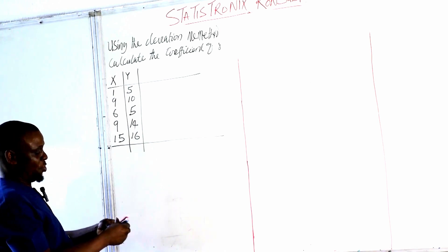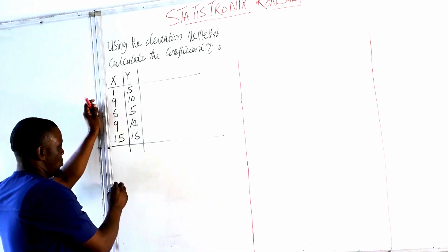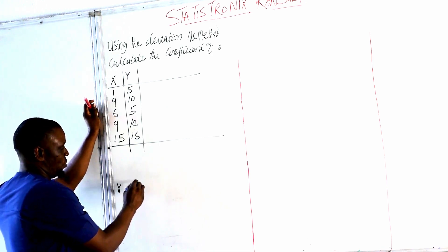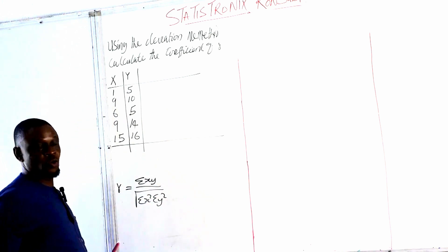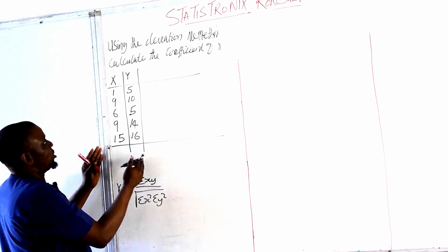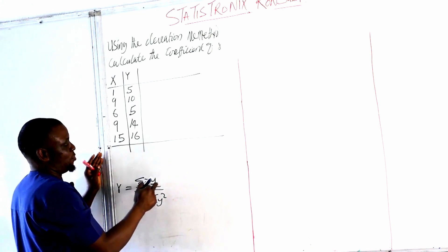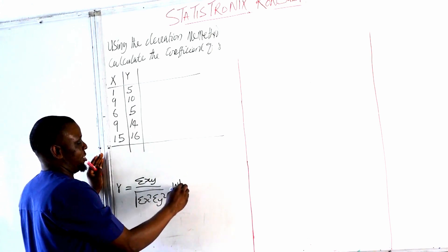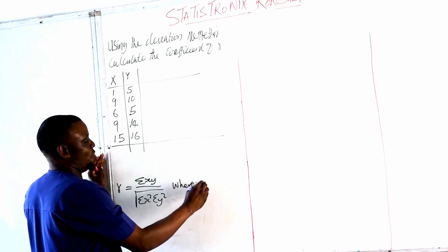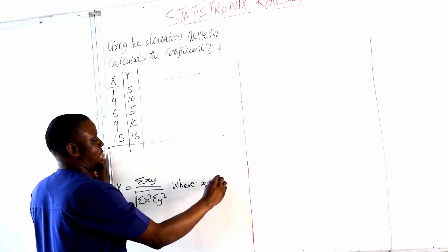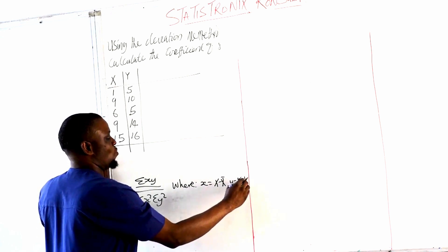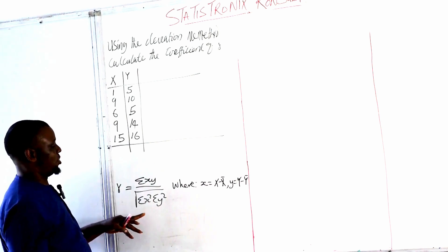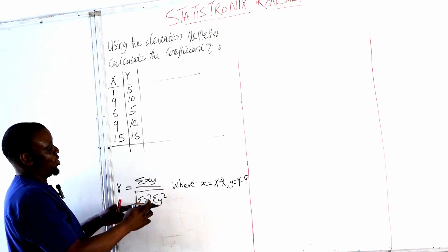Now the division method, the formula is r = ΣXY over the square root of ΣX² times ΣY². So if we have this, now we have to create a column for our small x and small y, noting that our small x is equal to X minus X̄ and our small y is equal to Y minus Ȳ.